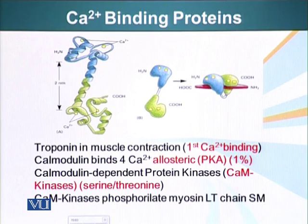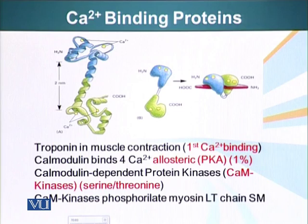When calmodulin binds the calcium ions, it goes through a conformational change. In this new conformation, it can activate or inactivate other proteins. This is a very important protein — about 1% of the protein mass of a cell is calmodulin.